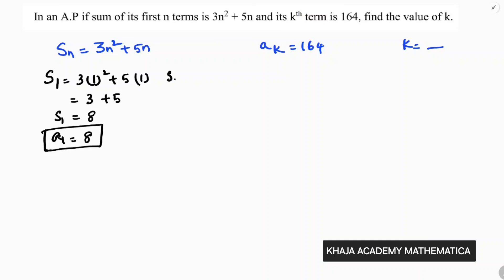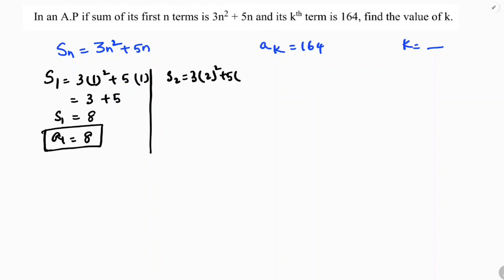Next, I will calculate S2. S2 is 3 times 2 squared plus 5 times 2. 3 times 4 is 12, plus 10, so S2 is 22.